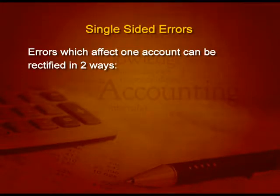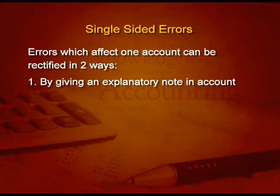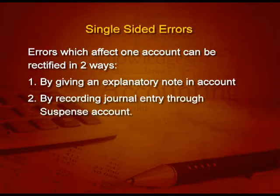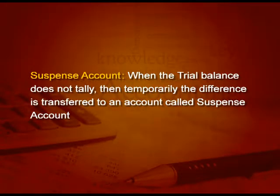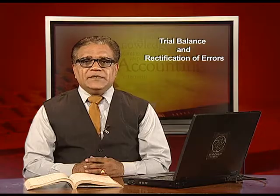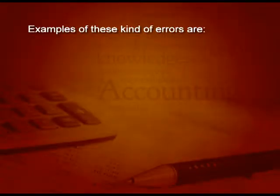Errors which affect one account can be rectified in two ways: first by giving an explanatory note in the account, and second by recording a journal entry through a suspense account. When the trial balance does not tally, then temporarily this difference is transferred to an account which is called the suspense account.